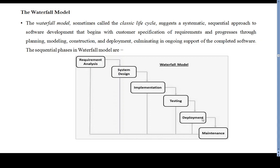The waterfall model is the oldest software model. It suggests a systematic, sequential approach to software development. Development starts with the requirement gathering phase, then progresses through analysis, design, coding, testing, and implementation. In the requirement gathering and analysis phase, the basic system requirements must be understood by the software engineer, also called an analyst.